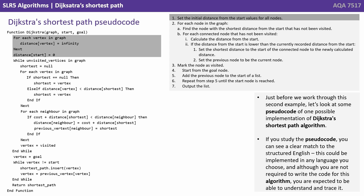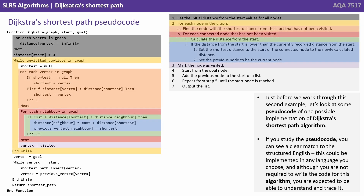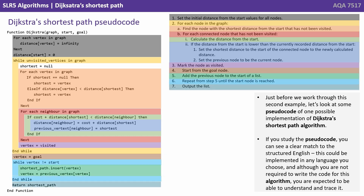Just before we work through this second example, let's look at some pseudocode for one possible implementation of Dijkstra's shortest algorithm. If you study the pseudocode, you can see a clear match to the structured English. This could be implemented in any language you choose, and although you are not required to write the code for this algorithm, you are expected to be able to understand and trace it.